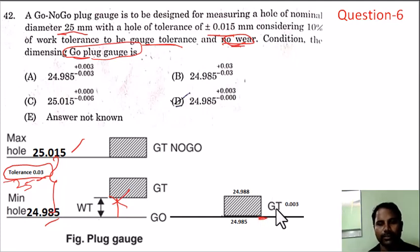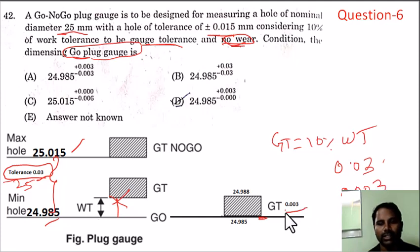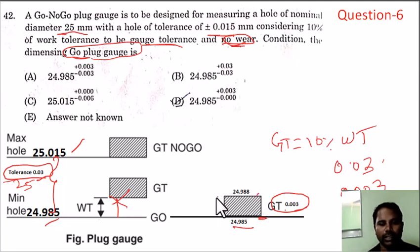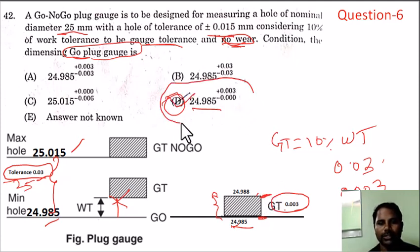Gauge tolerance is 10% of work tolerance. Work tolerance is 0.03, so 10% gives gauge tolerance of 0.003. The lower limit is 24.985 and adding 0.003 gives 24.988 as the upper limit. Option D is the correct answer — 24.985 is the base and 0.003 is the tolerance limit.